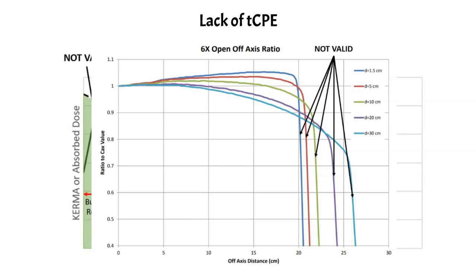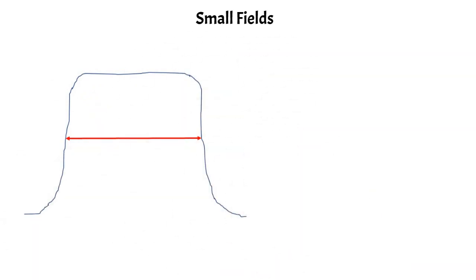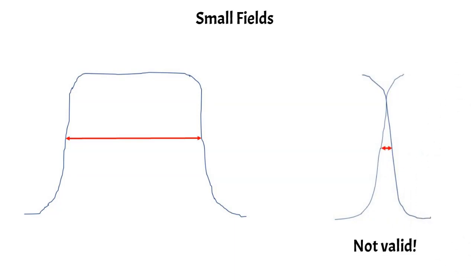With any hand calculation, it's crucial that charged particle equilibrium exists at the point of dose calculation. Extending the penumbra idea, this also applies to small fields. A regular-sized field has a sharp, well-defined penumbra, but as the jaws are brought in and the field size decreases, eventually the penumbras on each side overlap. Since the penumbras are overlapping, there is no point of charged particle equilibrium within that field. For very small fields, the hand calculation formalism is not valid because CPE conditions do not exist.